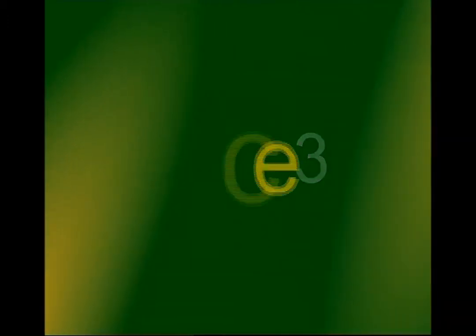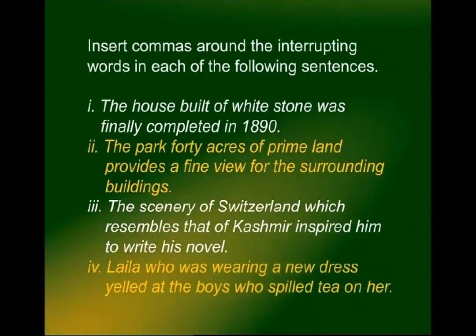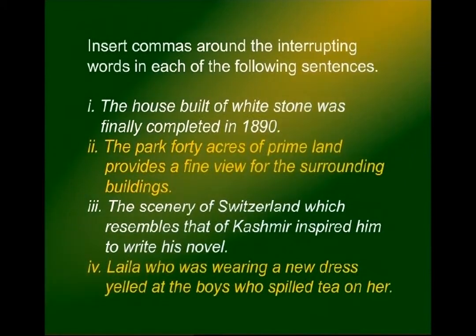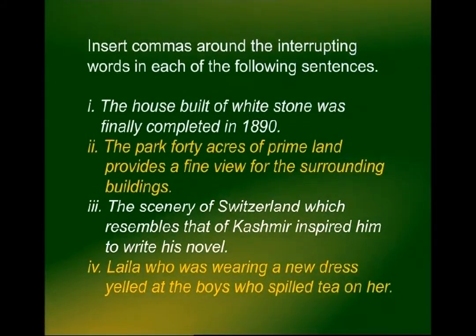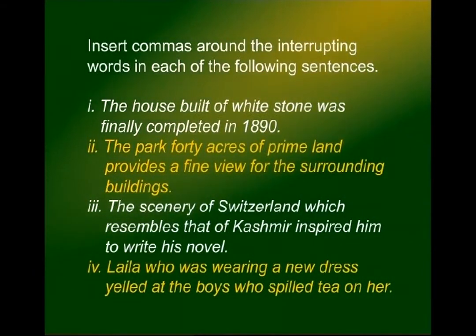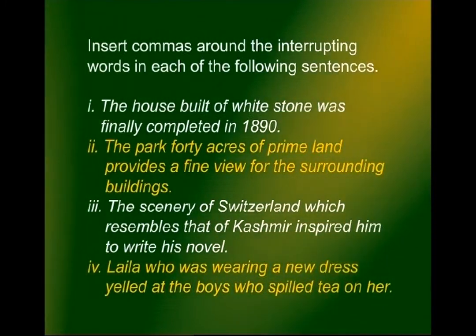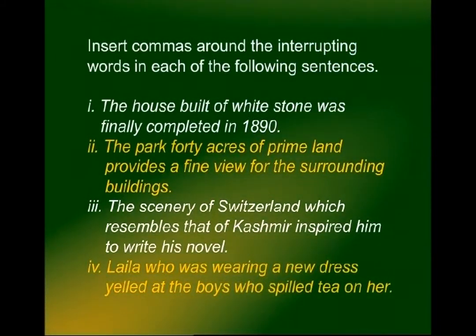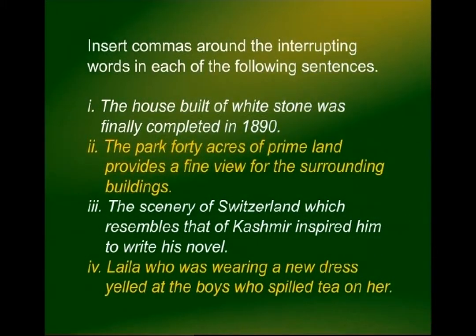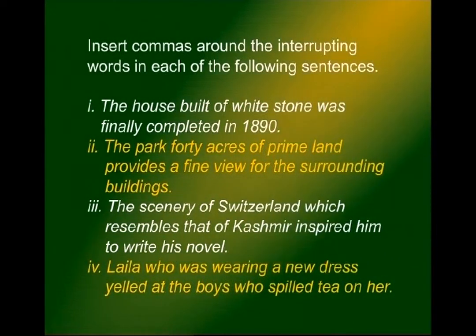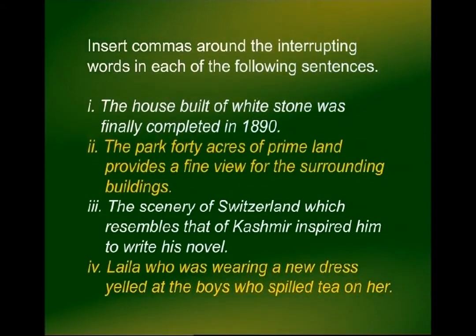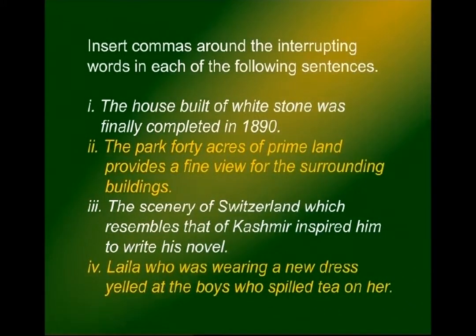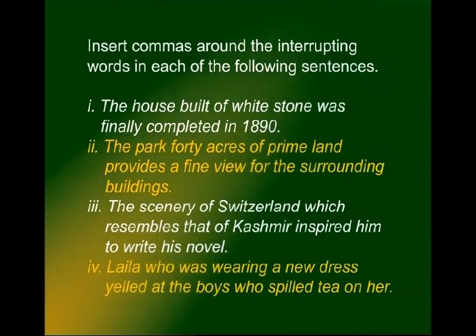Practice for rule three. One: 'The house, built of white stone, was finally completed in 1890' — commas after 'house' and 'stone'. Two: 'The park, 40 acres of prime land, provides a fine view of the surrounding area' — '40 acres of prime land' is set off by commas. Three: 'The scenery of Switzerland, which resembles that of Kashmir, inspired him to write his novel' — 'which resembles that of Kashmir' is set off by commas.